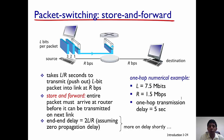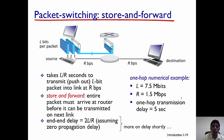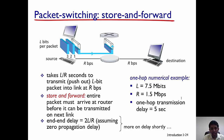Let's look at a numerical example to understand this concept of delay. Assume the packet to be transmitted is 7.5 megabits, which is 7.5 times 10 to the power of 6 bits, and the transmission rate R is 1.5 megabits per second. The delay over one link — from one host to the router — is L over R, which gives you 5 seconds. That is the one-hop transmission delay from the source to the router. The end-to-end delay is two times that, so the end-to-end delay is 2 times 5 seconds, which is 10 seconds.